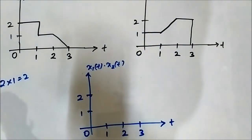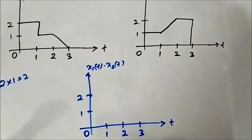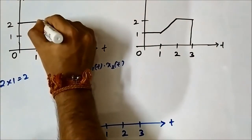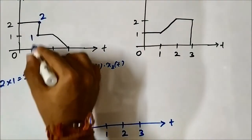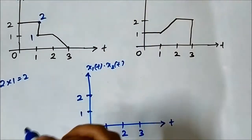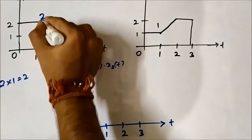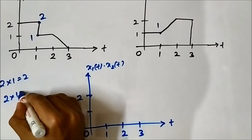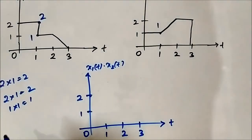As I also mentioned in the signal addition videos, whenever there is a transition — high to low or low to high — there is a sharp transition and you have to consider both values. At t equals 1, x1(t) has two values, 2 and 1, because of the downward transition. But x2(t) has only one value, 1. So at t equals 1 it will be 2 into 1 which equals 2, and 1 into 1 which equals 1.